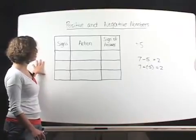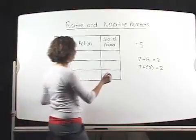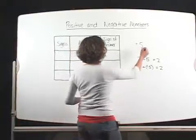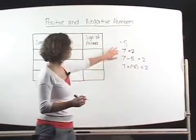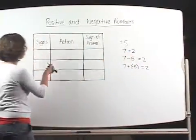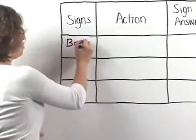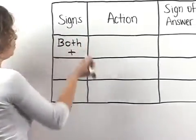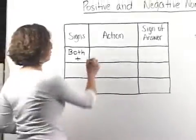Now if we have a problem like seven plus two, both of those numbers are positive, so our signs are both positive. Now what we're going to do is we're going to add them.